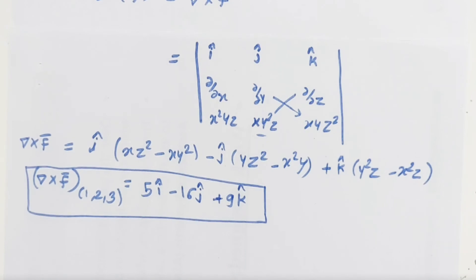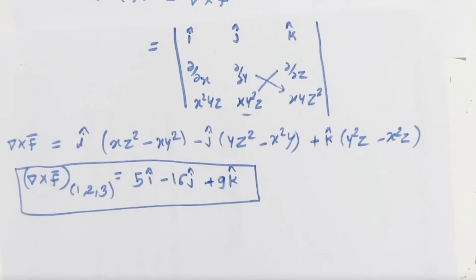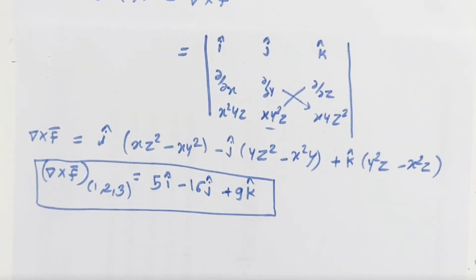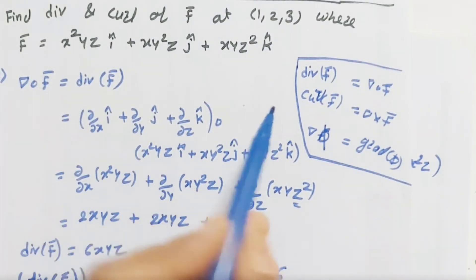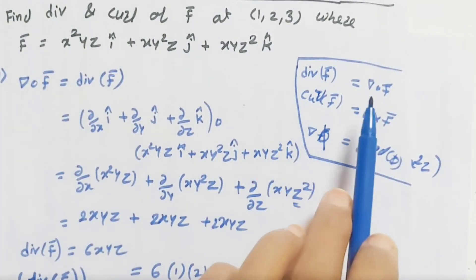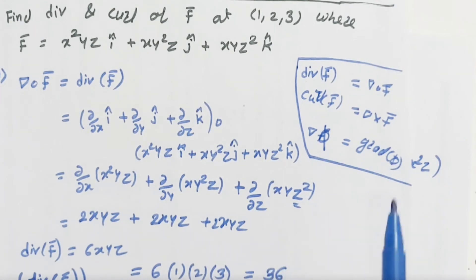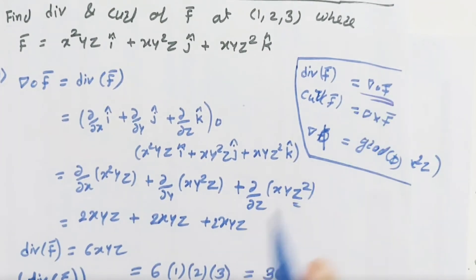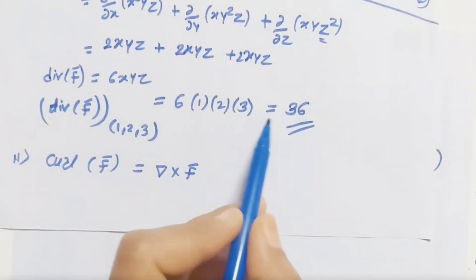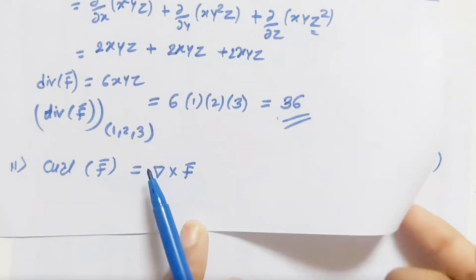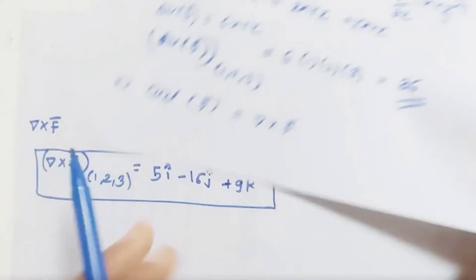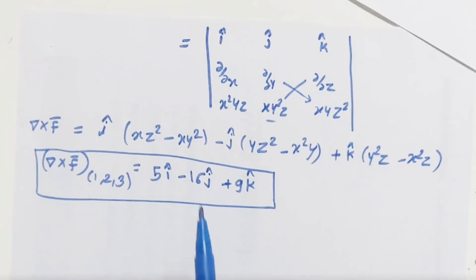So that is the example for divergence and curl. Remember: divergence gives an answer in scalar form, while curl gives an answer in the form of a vector. Examples are straightforward — just apply dot product for divergence and cross product for curl.